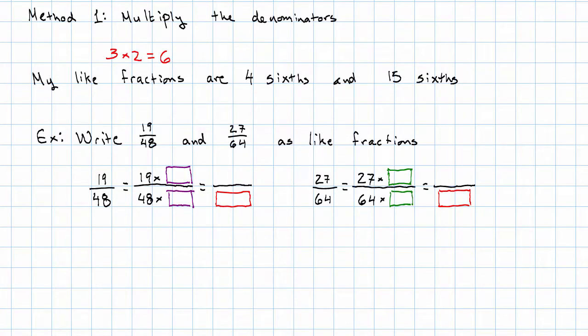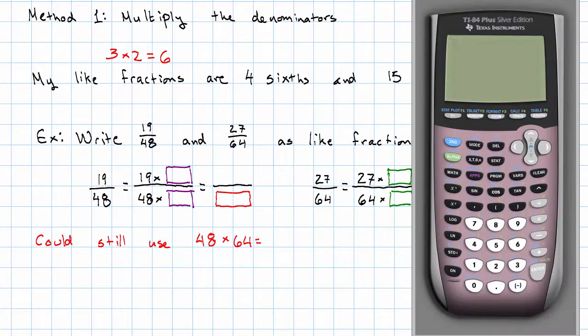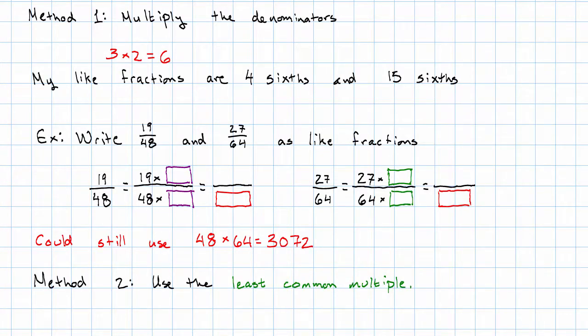Now we could still multiply the denominators. I don't particularly want to work out 48 times 64 by hand, but I could use my calculator. 3,072. If there's going to be any more arithmetic involved, I want to avoid having denominator 3,072 if I possibly can. My other option is method 2. I could use the least common multiple of 48 and 64.